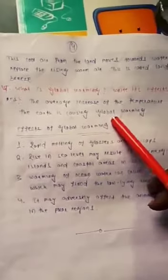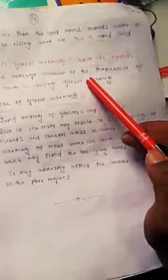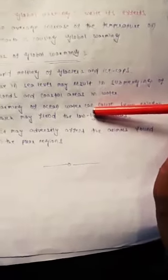What is global warming? Write its effects. The average increase of temperature on the earth is causing global warming. Deforestation and increasing carbon dioxide gases cause global warming. Effects of global warming: rapid melting of glaciers and ice caps, rising sea level may result in submerging of islands and coastal areas in water, warming of ocean water can cause heavy rainfall which may flood the low lying areas. It may adversely affect the animals found in the polar regions.